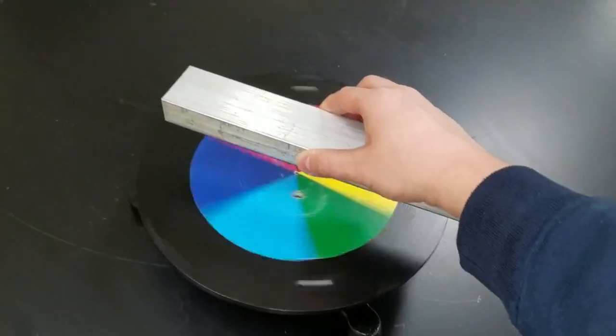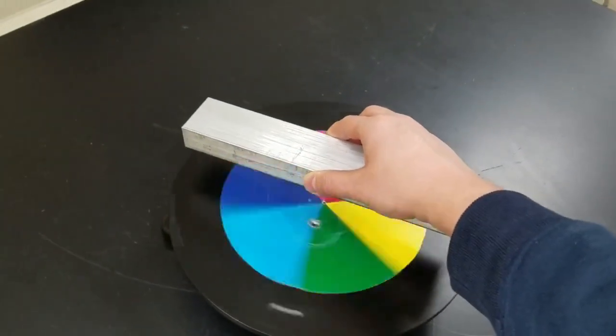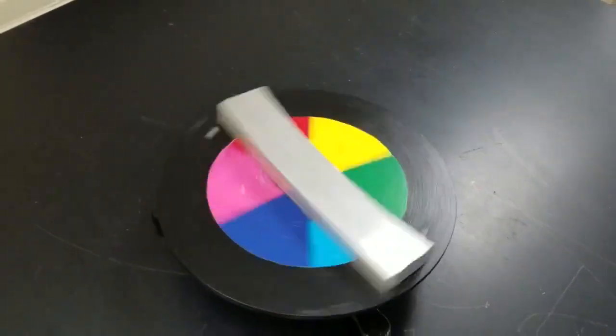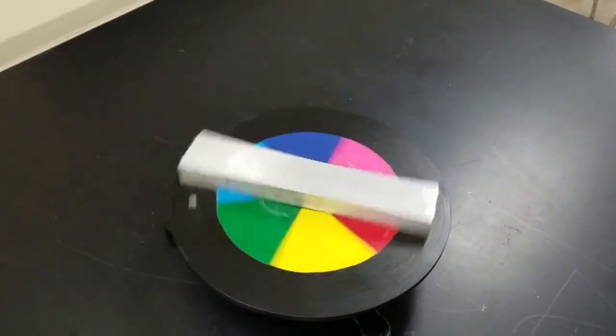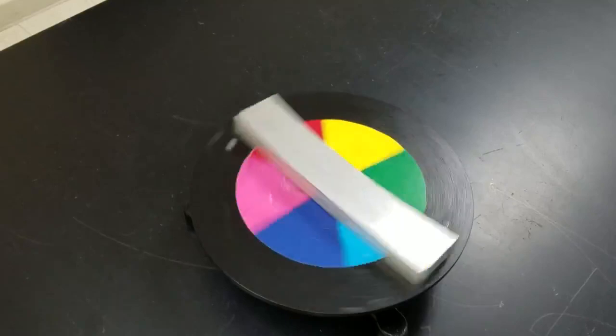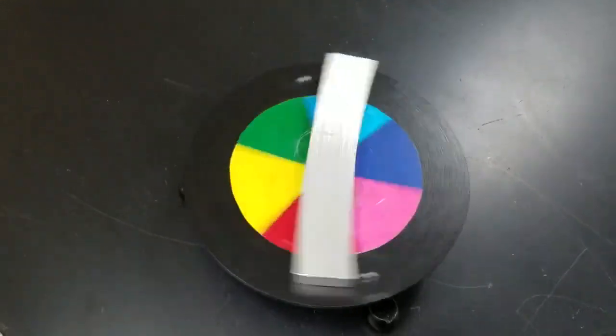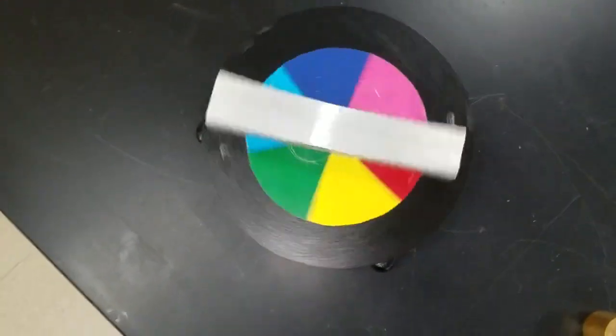In our experiment, we drop an initially motionless aluminum bar onto the rotating turntable and after the collision both the bar and the turntable rotate at a common angular velocity.